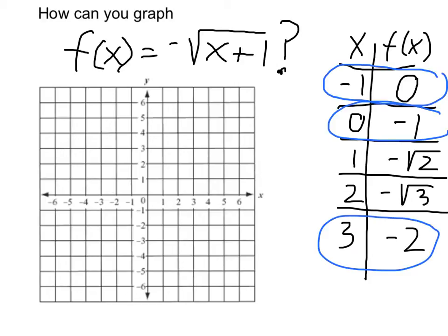To graph these few points, first I have negative 1, 0. Then I have 0, negative 1. And finally I have 3, negative 2.